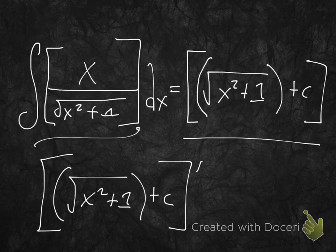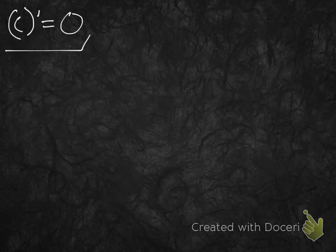c prime, what is it? It's always 0 because c could be any constant number, and it's still just going to always be 0. So c prime is 0, we're done. We can get rid of c and not even really worry about it. Now let's take the prime of radical x squared plus 1.